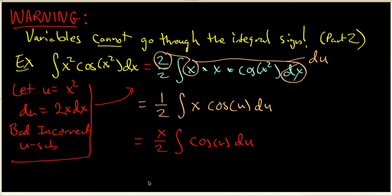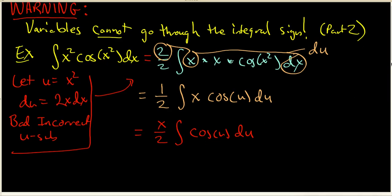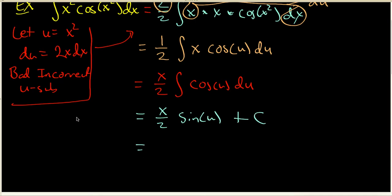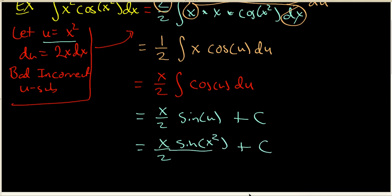At this point they say: what I'm looking at is x over 2, and I know how to integrate cosine of u — that's going to be sine of u plus a constant. And I know what u is: u is x squared. So I've got x over 2 times the sine of x squared plus a constant.